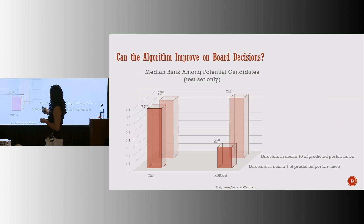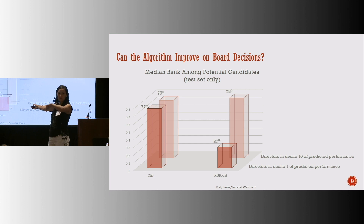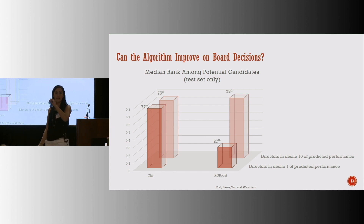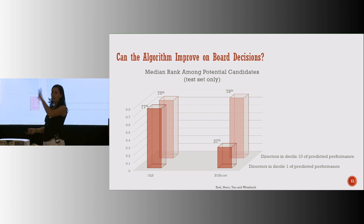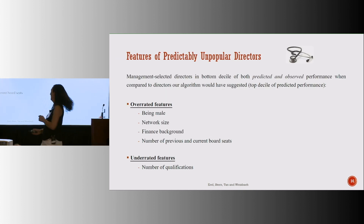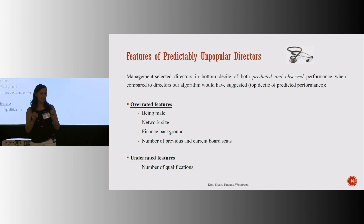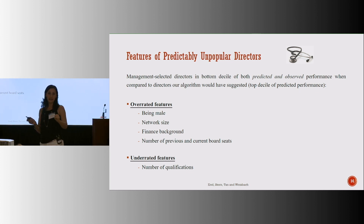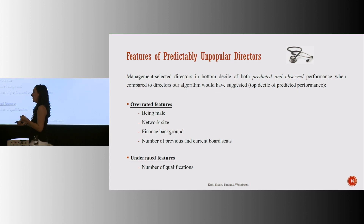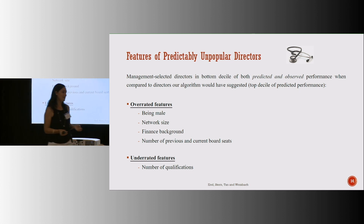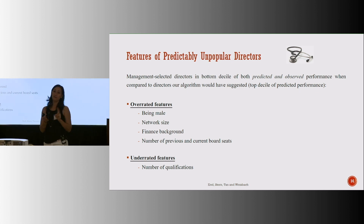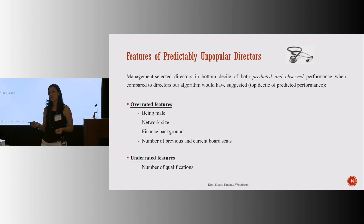So here are the findings. We find that the median rank in the distribution of quasi-labels is at the 27th percentile — pretty low. Directors in the first decile of predicted performance rank at the 27th percentile, whereas directors predicted to do well tend to rank pretty high. This is using the XGBoost algorithm. If we compare to what an OLS model would give us, the OLS model really struggles again. Turning to our diagnostic tool, those directors who are predictably bad — who are they? Maybe not surprisingly, they tend to be the usual suspects: your stereotypical director. They tend to be men with large networks with lots of current and prior directorships, and one underrated feature is the number of qualifications.